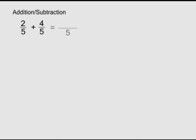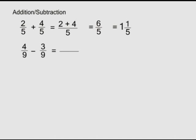Operations on fractions: addition and subtraction. When we add or subtract fractions with equal denominators, we simply add the numerators. So two over five plus four over five: we retain the denominator five, then two plus four gives us six over five, which as a mixed fraction is one and one over five. Four over nine minus three over nine: we retain the denominator nine, then four minus three gives us one over nine.